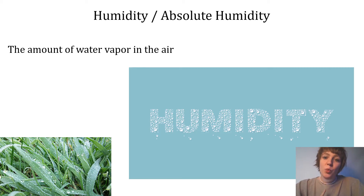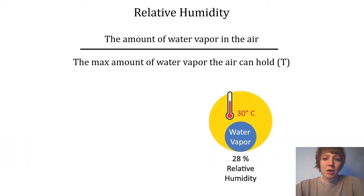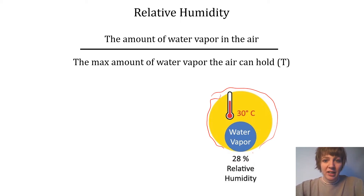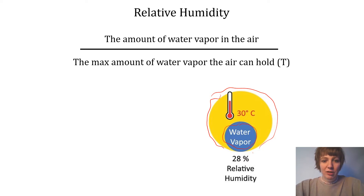When it comes to weather, most of the time we're actually more interested in relative humidity than just absolute humidity. If you have some parcel of air, imagine that the yellow circle represents the maximum amount of water vapor that the air can hold, and the blue circle indicates the actual amount of water in the air. The ratio between the two — the amount of water vapor relative to the maximum possible — is the relative humidity.